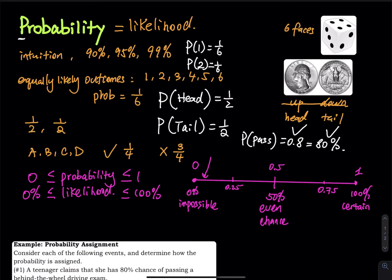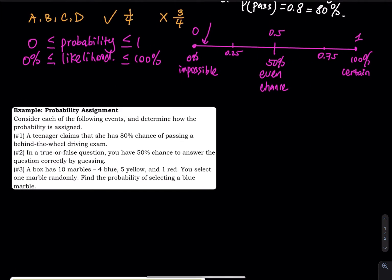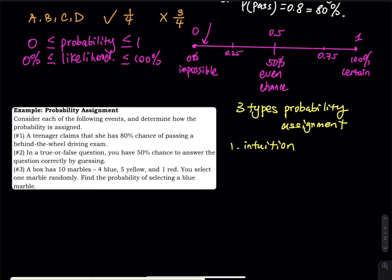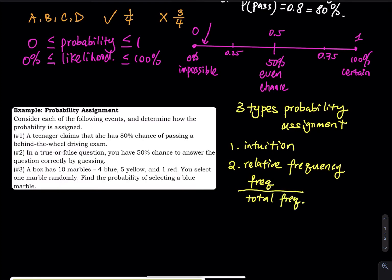There are three types of probability assignments. The first type is based on intuition — based on your historical performance or how good you are with something, you give a probability. The second type is based on relative frequency, which is the frequency of that event divided by the total frequency. The third type is equally likely outcomes — like a multiple choice test where the probability of getting A is one over four.